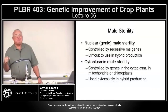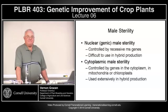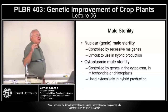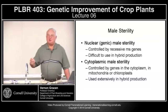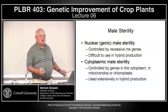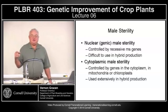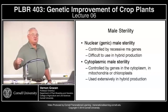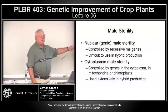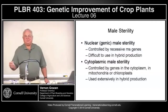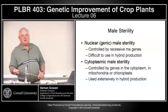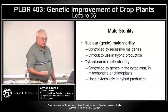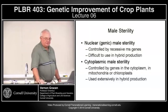Self-incompatibility has been less useful in commercial hybrid or variety production than male sterility. However, in some cases — such as in vegetable breeding — self-incompatibility has been used to commercially produce hybrids by planting a self-incompatible female with a male, ensuring that only crosses between the male and self-incompatible female succeed.